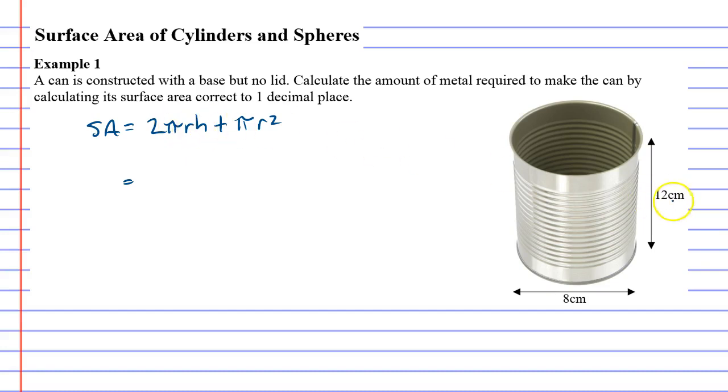h is the height so 12 centimeters and r is the distance from the middle to the edge so r equals 4 centimeters. Let's plug that into our formula: 2 times π times r being 4 times h being 12 plus π times r squared.